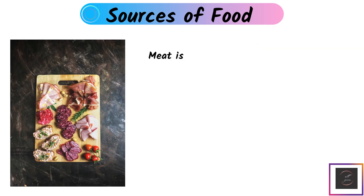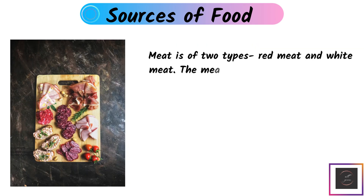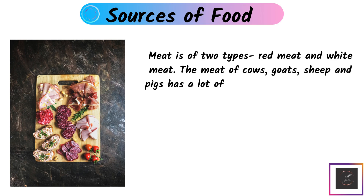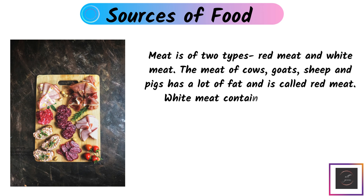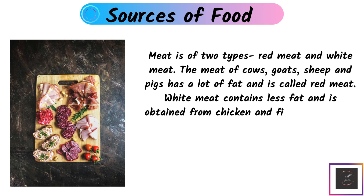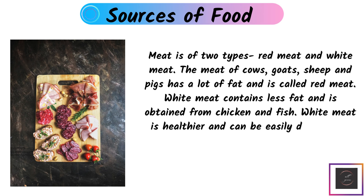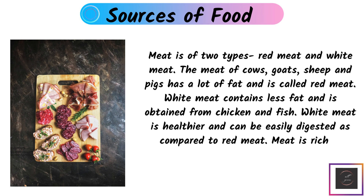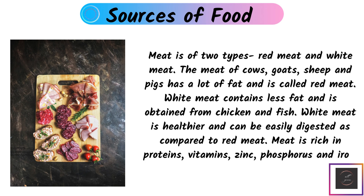Meat: Meat is of two types — red meat and white meat. The meat of cow, goat, sheep, and pigs has a lot of fat and is called red meat. White meat contains less fat and is obtained from chicken and fish. White meat is healthier and easier to digest compared to red meat. Meat is rich in protein, vitamins, zinc, phosphorus, and iron.